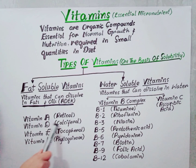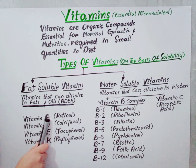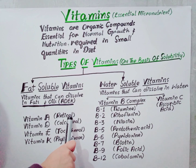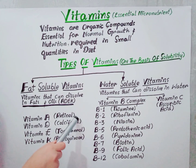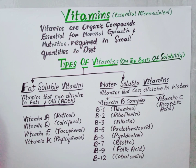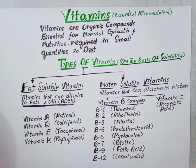First we have vitamin A, retinol. Vitamin A is a fat-soluble vitamin and is naturally present in many foods. Vitamin A is important for normal vision, the immune system, and reproduction.